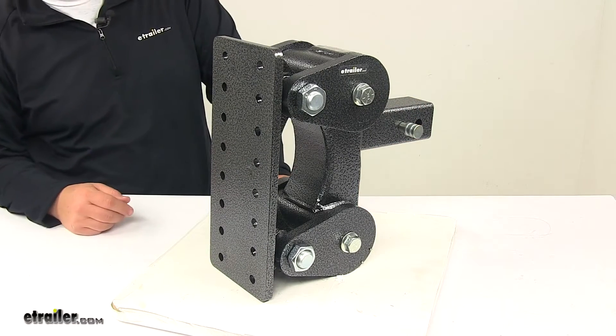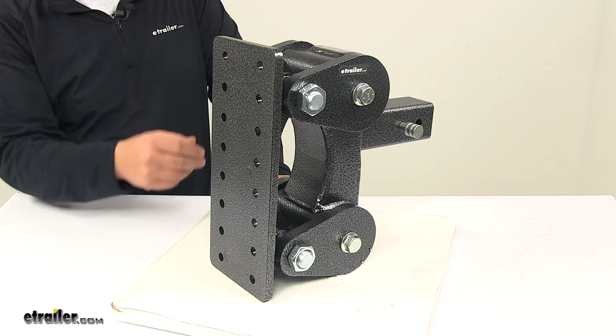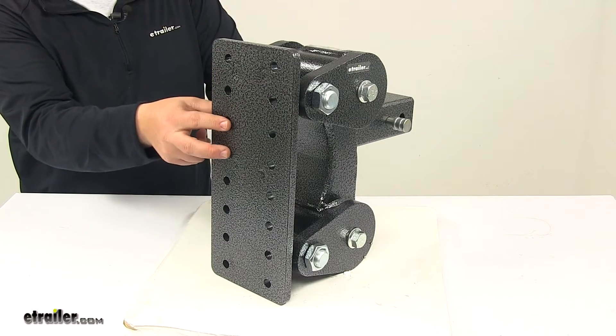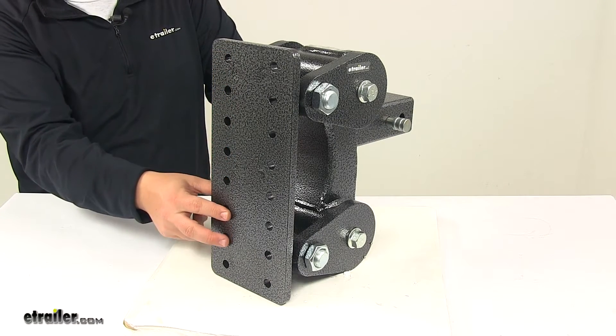Now the unit features seven adjustable positions. This ensures that your towing setup is always as level as possible. So you have position one, two, three, four, five, six, and seven.